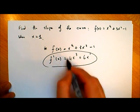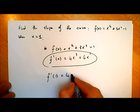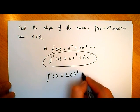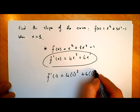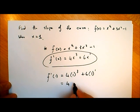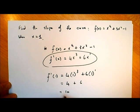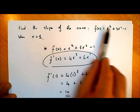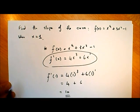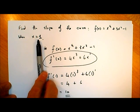I just fill in x equal to 1: f dash of 1 equals 4 times 1 cubed plus 6 times 1 to the power of 1. 1 cubed is 1, so 4 times 1 is 4. And 6 times 1 is 6. So we get 4 plus 6 equals 10. The slope of this curve when x is equal to 1 is 10 — quite a steep slope.